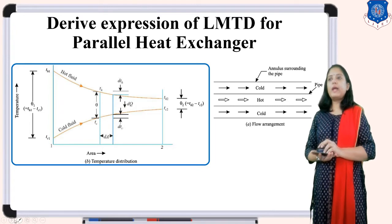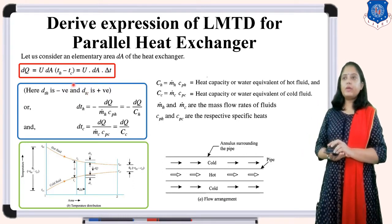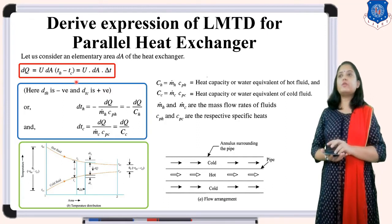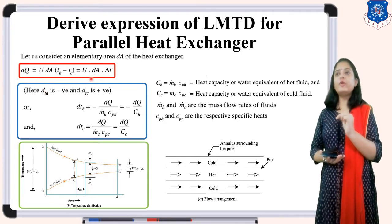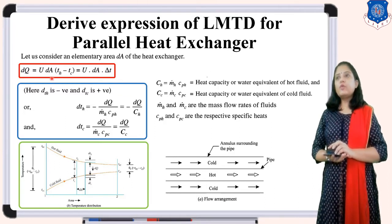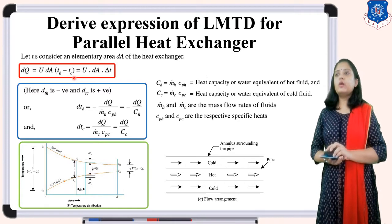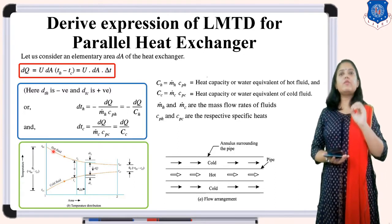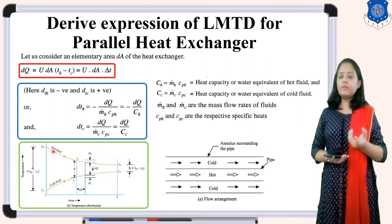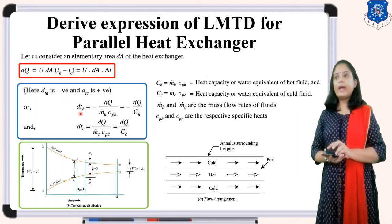We find θM (LMTD) for parallel flow. The basic equation is DQ = U · DA · (TH - TC). Since the hot fluid rejects heat, its temperature decreases, so DTH has a negative sign. Since the cold fluid receives heat, its temperature increases, so DTC has a positive sign.